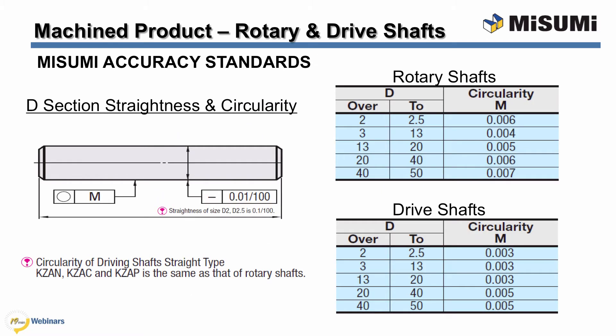The key difference between rotary and drive shafts is the tolerance range, so I will begin by reviewing their technical and tolerance specifications. The first tolerance standards I will discuss are the straightness and circularity tolerances. These are very important because they ensure that the shaft will rotate accurately without causing vibration. The straightness tolerance is 0.01 millimeters per 100 millimeters of shaft length for both rotary and drive shafts. Note that smaller shaft options with diameters 2 and 2.5 millimeters have a straightness tolerance of 0.1 millimeters per 100 millimeters. The circularity tolerances show that rotary shafts have a circularity tolerance of as low as 4 microns and drive shafts as low as 3 microns.